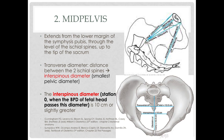The mid-pelvis extends from the lower margin of the symphysis pubis through the level of the ischial spines up to the tip of the sacrum. The transverse diameter at this level is the interspinous diameter — the distance between the two ischial spines — which represents station zero.